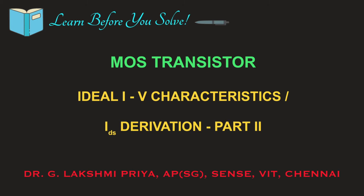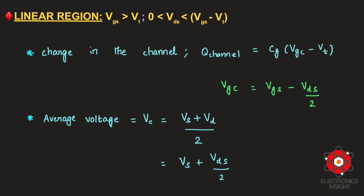Welcome to the 'Learn Before You Solve' series. This video is about the second part of ideal IV characteristics of a MOSFET transistor, specifically the drain-to-source current derivation. In the first part, we understood that in the cutoff region the current through an off-state transistor is zero for an ideal case. We also began the drain-to-source current derivation for the linear region.